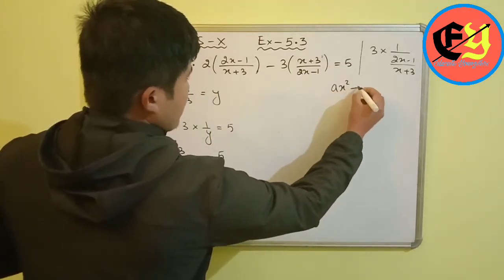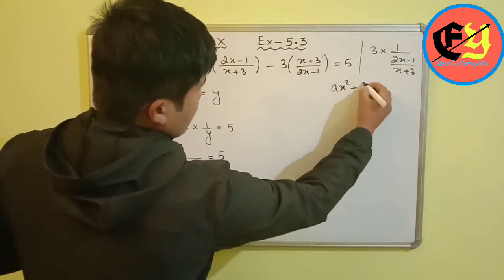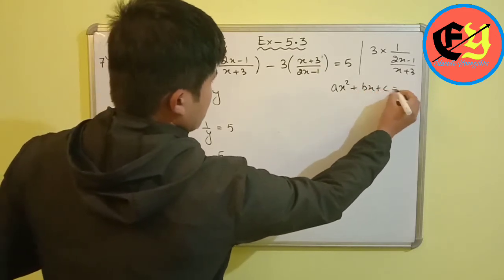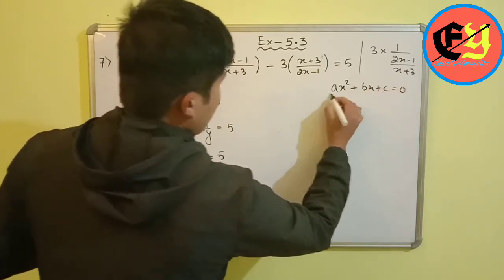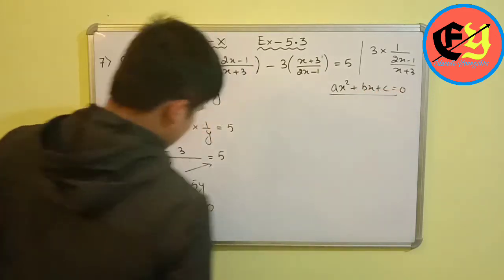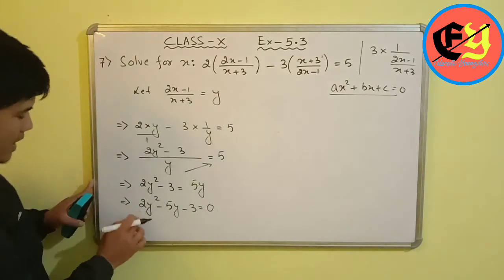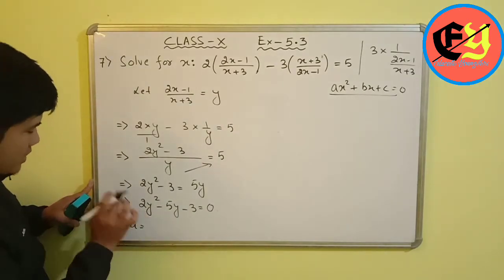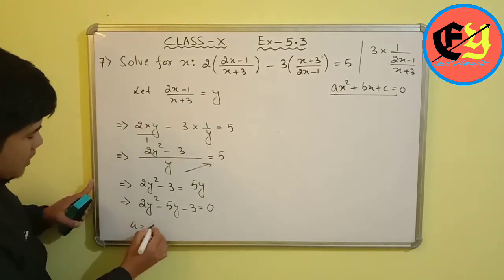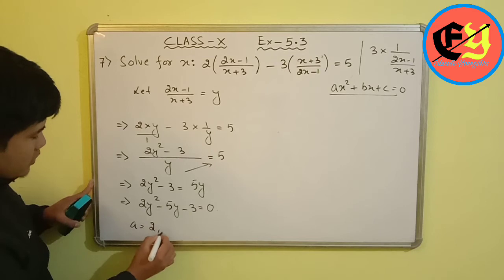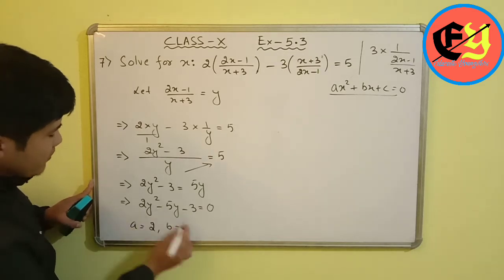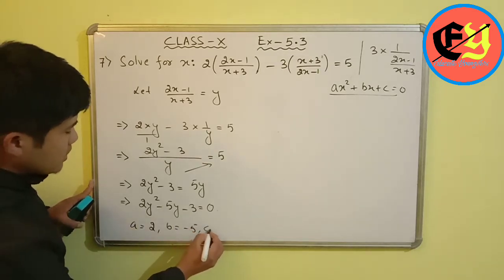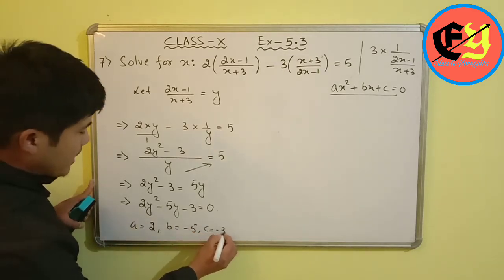This is in standard form: ax squared plus bx plus c equals 0. Comparing, we get a equals 2, b equals minus 5, and c equals minus 3.